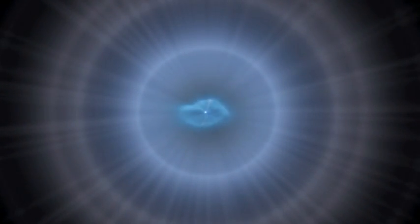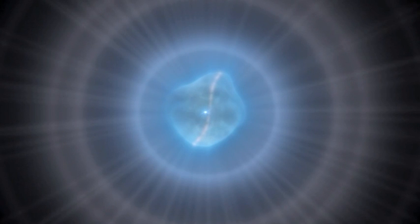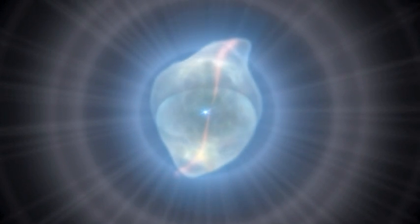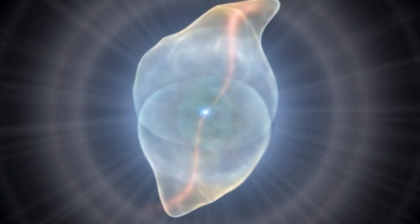A white dwarf with the same amount of material as our Sun would only be the size of Earth. Gas and dust shed by the star forms a planetary nebula, which surrounds the white dwarf in a colorful cocoon.